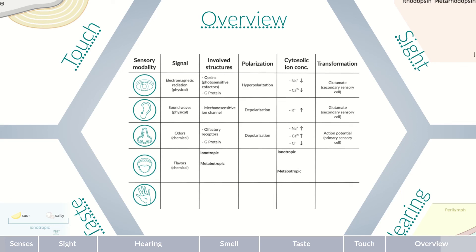There are two different signal transduction pathways in taste. Activation of ionotropic receptors leads to cation channel opening, increasing ion levels in the cell and causing depolarization. Activation of metabotropic receptors is caused by the binding of taste molecules, activating associated G-proteins, which initiate a signaling cascade resulting in increased calcium levels and cell depolarization. Taste receptors transmit their signal to afferent nerve fibers using glutamate.